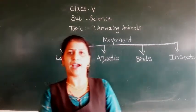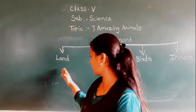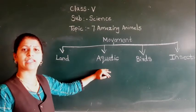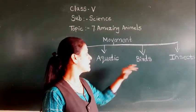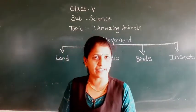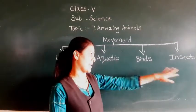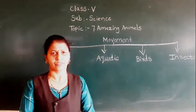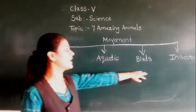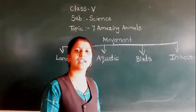We have learned the different types of animals. Animals which live on the land are called terrestrial animals. Animals which live in the water are called aquatic animals. Animals which fly in the air are called aerial animals.